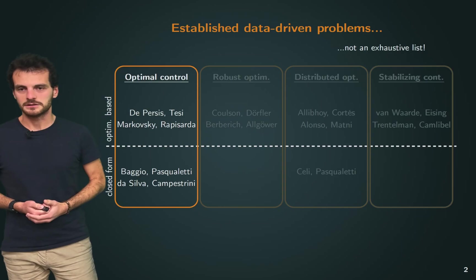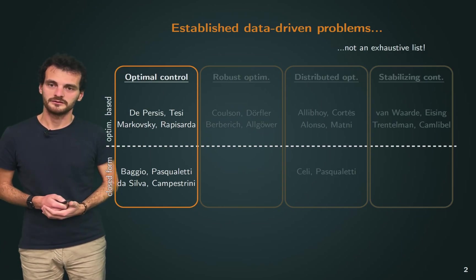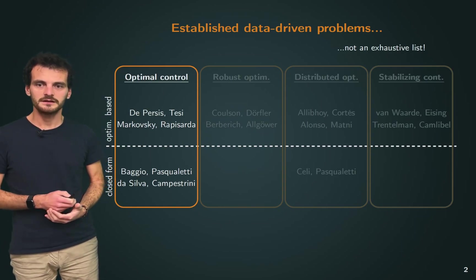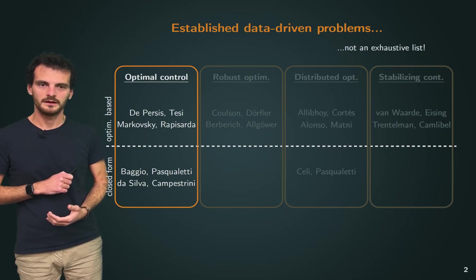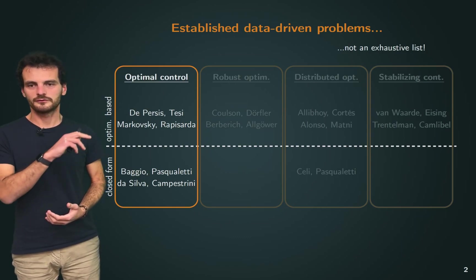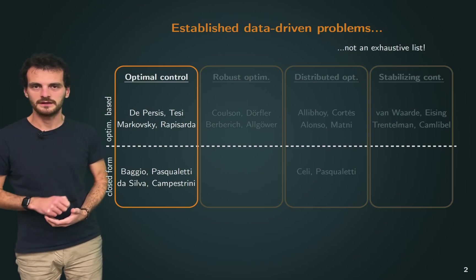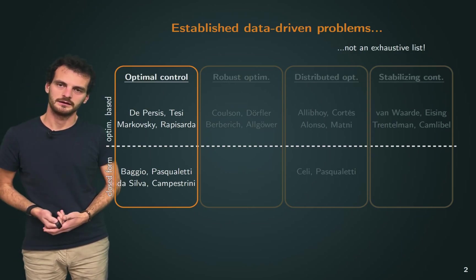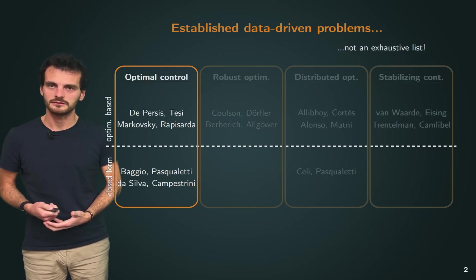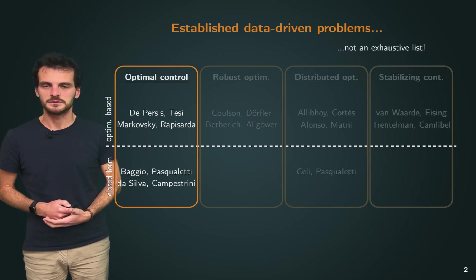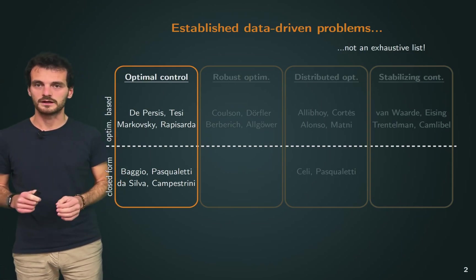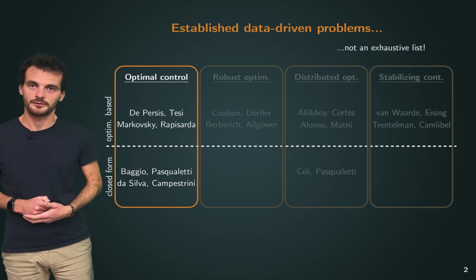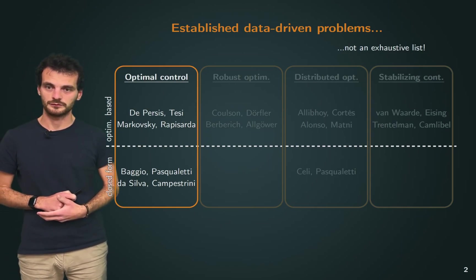There has been a rich literature, especially recently, in the so-called direct data-driven control approach. Here, I'm highlighting some of the most popular problems and the most productive groups. I'm also trying to separate optimization-based solutions, which are usually computed in the behavioral approach through optimization-based problems, usually based on LMIs, and closed-form solutions. This work is going to leverage some closed-form solutions to our problems.